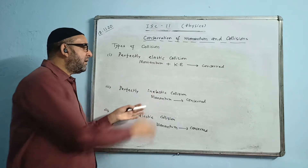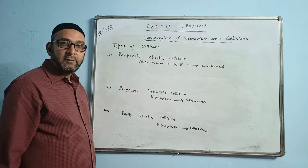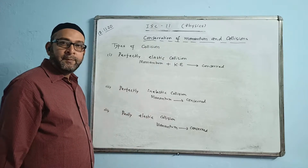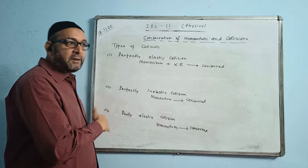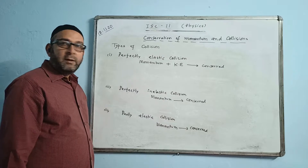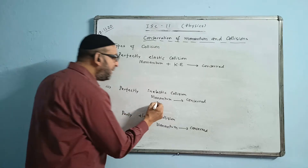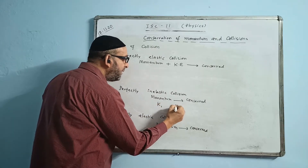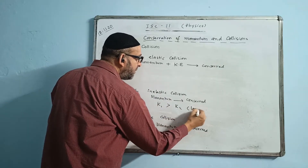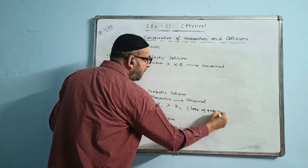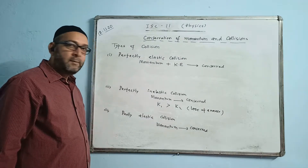In the second type of collision — perfectly inelastic — the initial kinetic energy will be greater than the final kinetic energy. If we write initial kinetic energy as K1 and final kinetic energy as K2, then K1 is bigger than K2. That means loss of energy takes place in this type of collision.